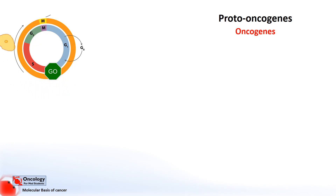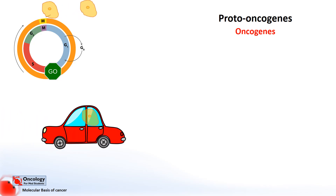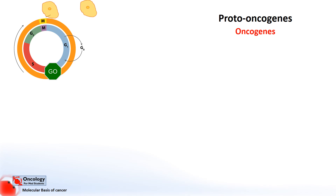Where tumor suppressor genes stop the cells moving through the cell cycle — like the brakes of a car — oncogenes are like the accelerator pedal. Where a loss of function of tumor suppressor genes promotes the growth of cancer, it's a gain in function of proto-oncogenes, turning them into oncogenes, that leads to the growth of cancers.